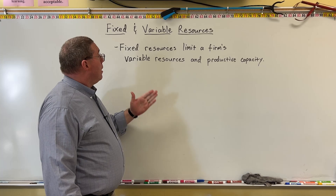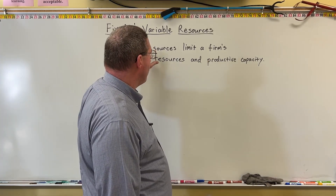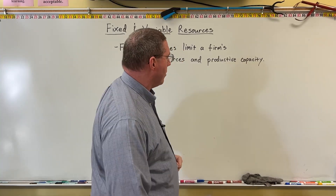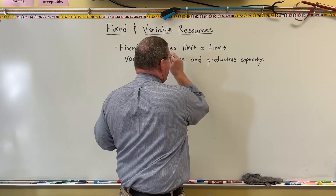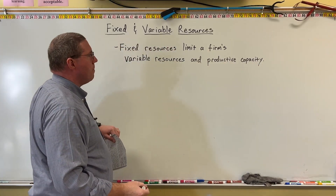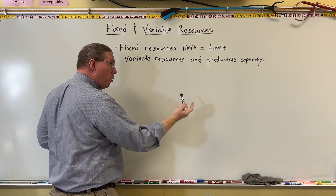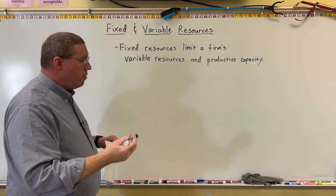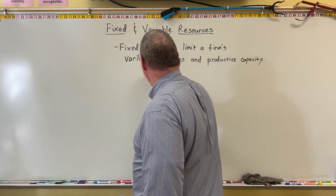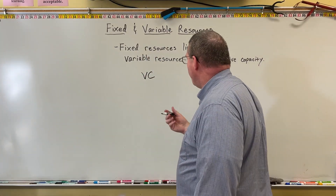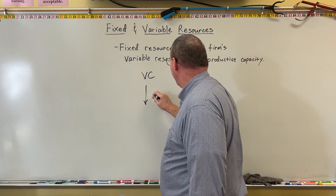We already saw in the previous video on productive capacity that fixed resources also limit productive capacity. So, between fixed resources limiting productive capacity and also limiting variable resources, here's the argument: variable resources contribute to variable costs, and variable costs combine with fixed costs — and remember, fixed costs don't change.